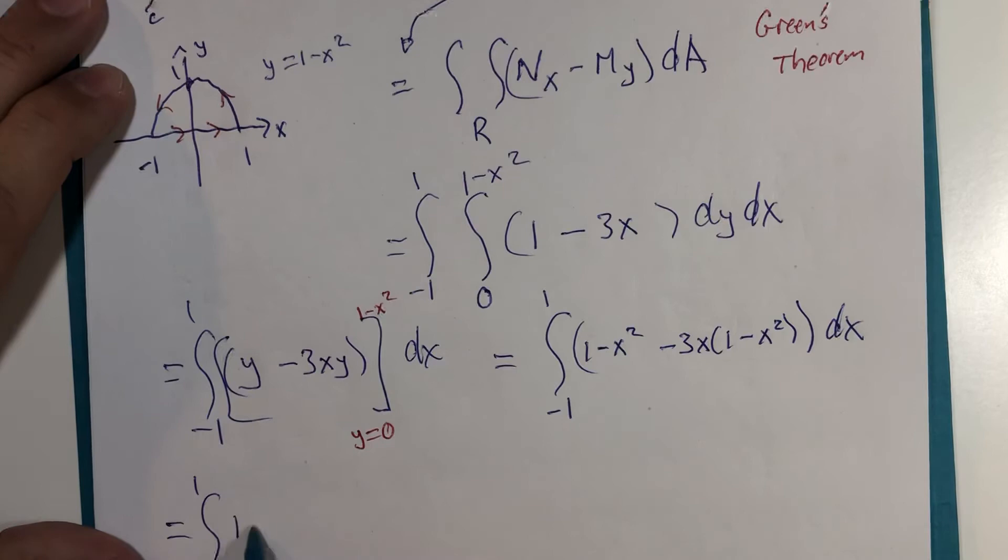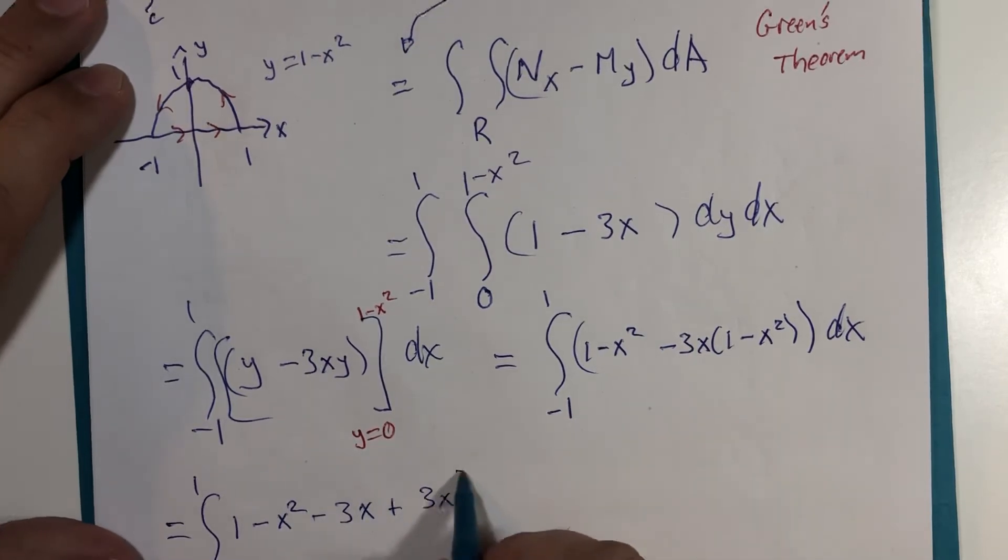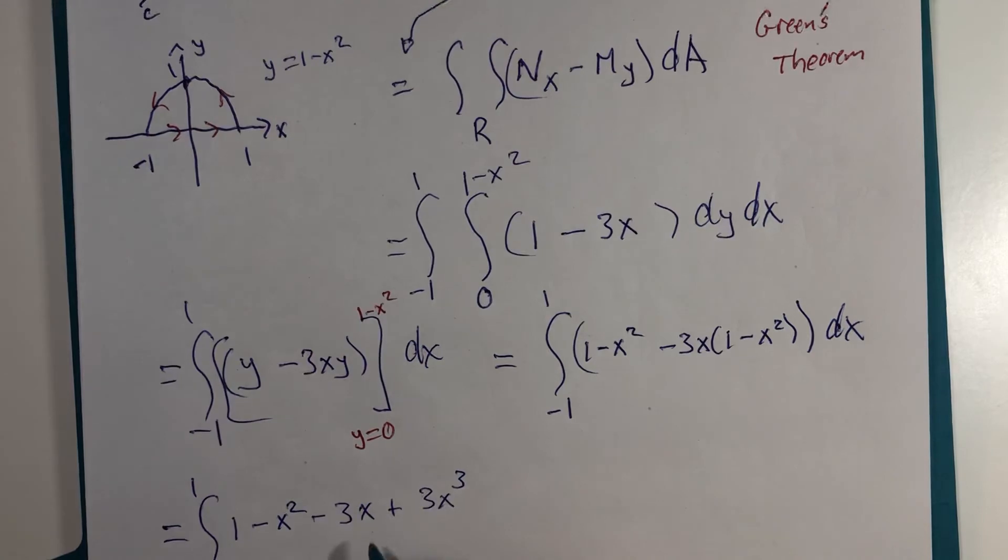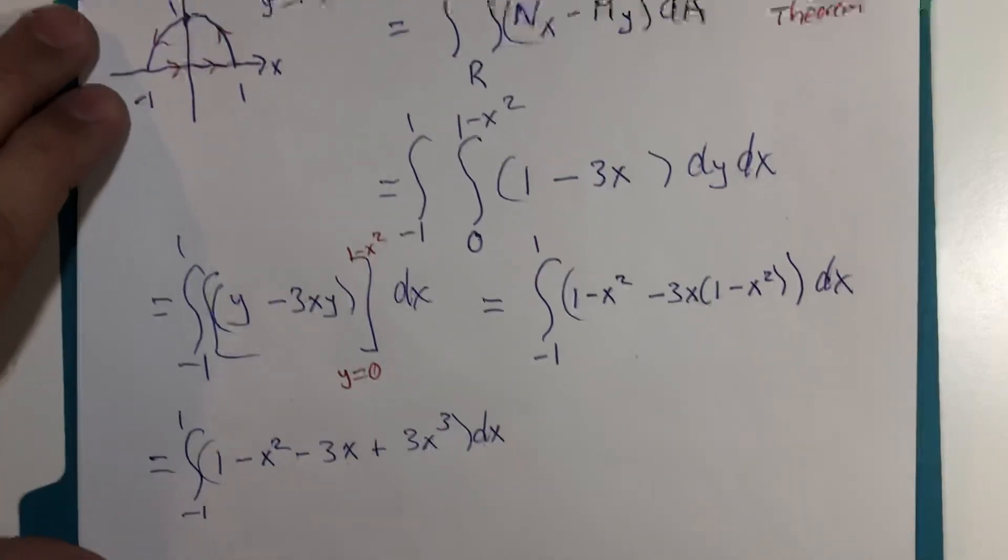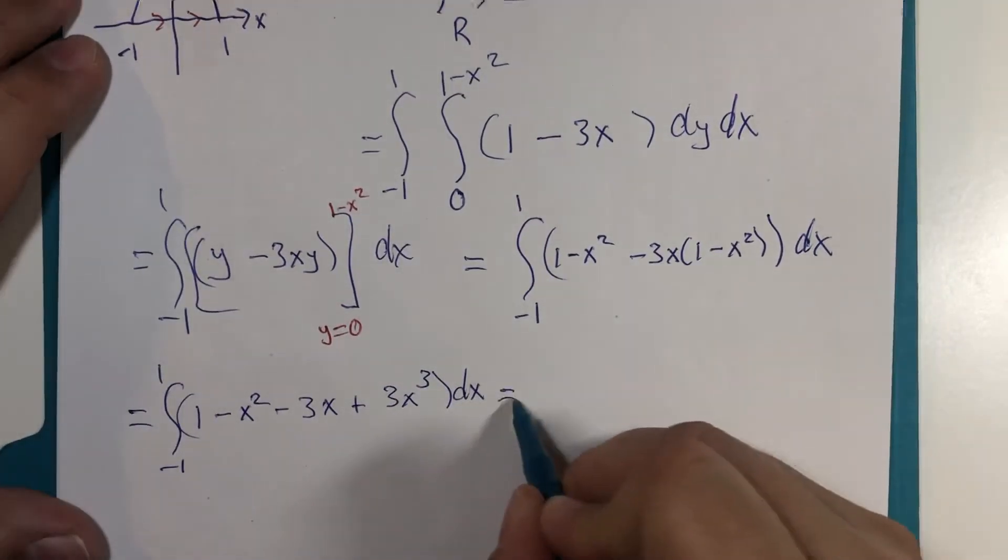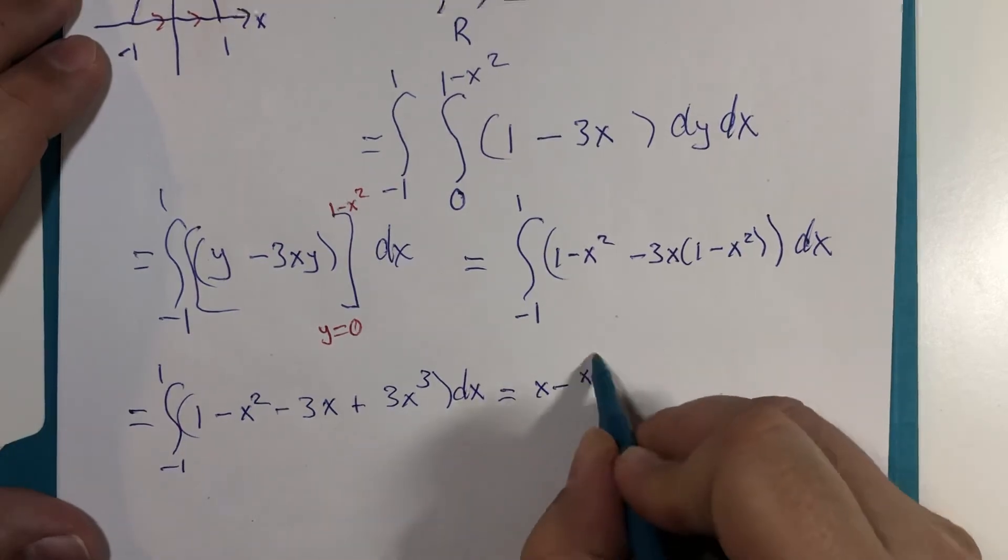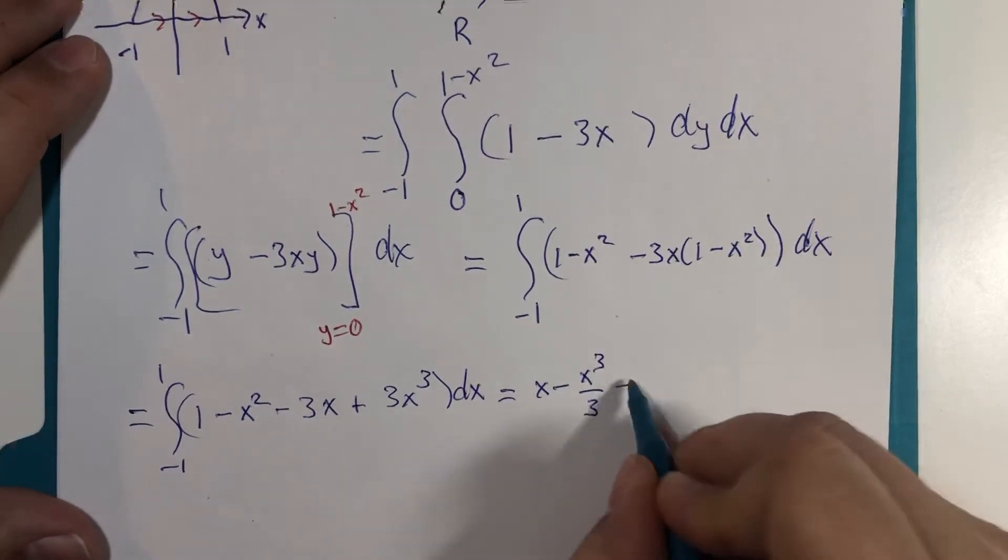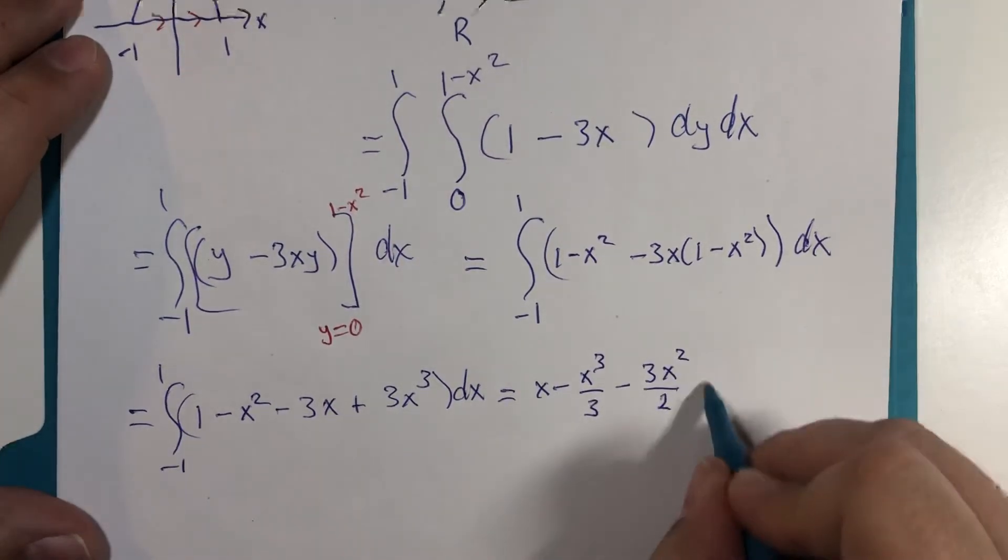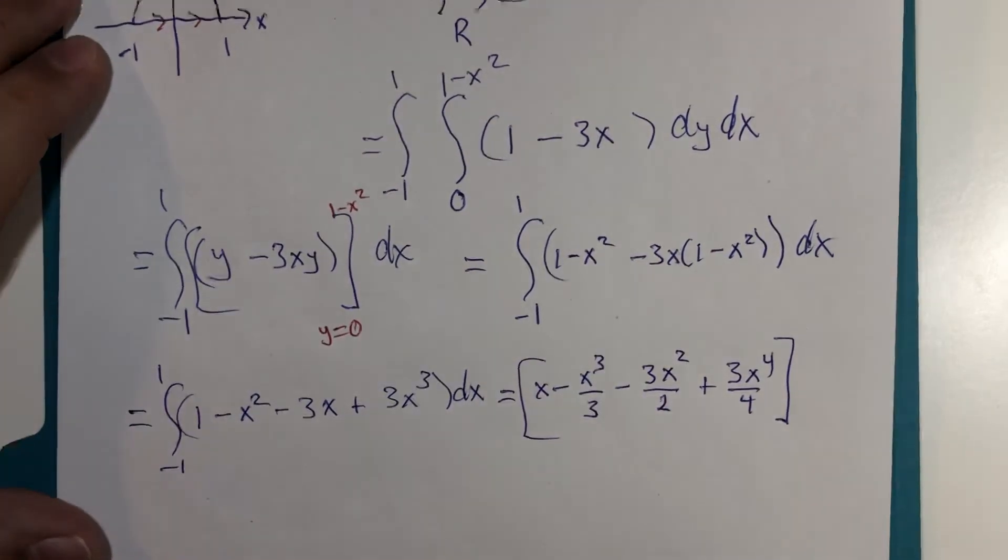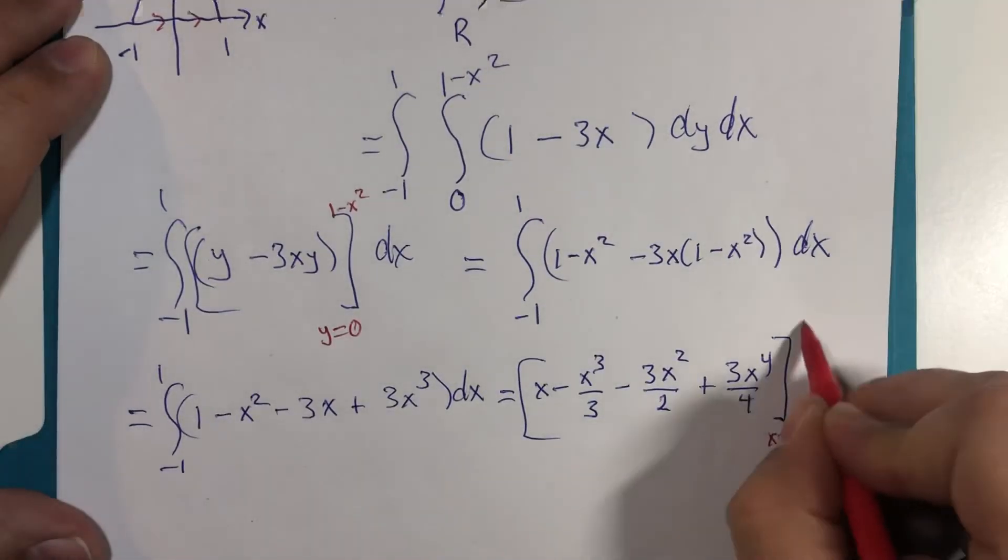I'm going to maybe look at the terms individually so I could use the power rule. So, 1 minus x squared minus 3x plus 3x cubed looks like what I get. And this looks like a job for the power rule.